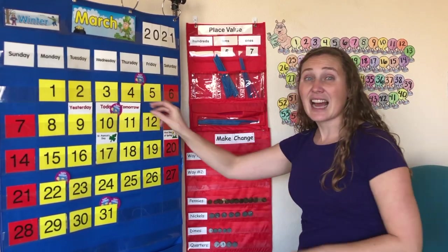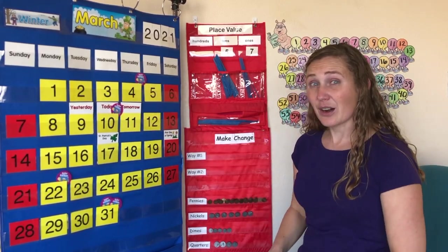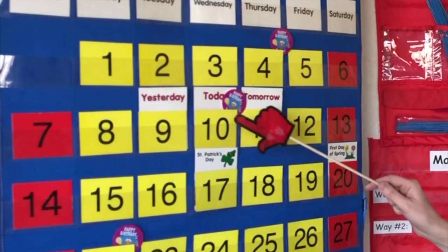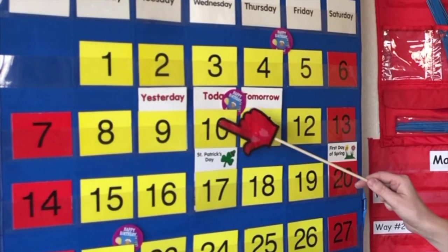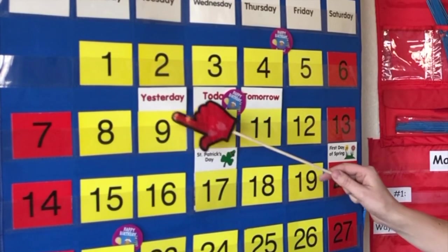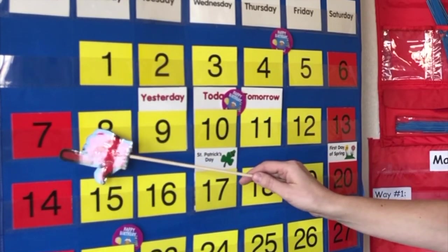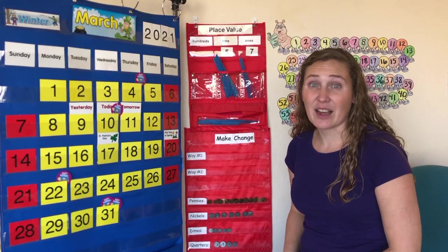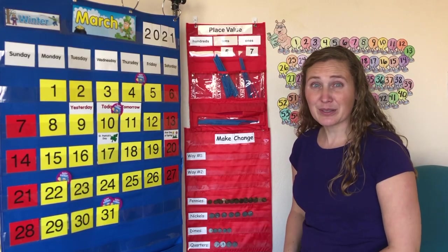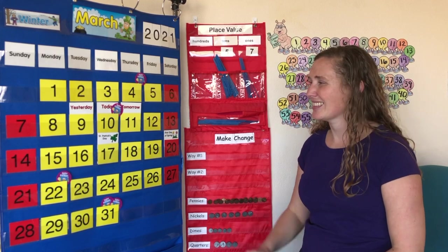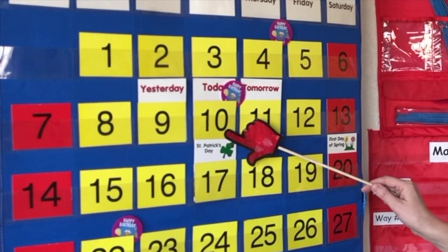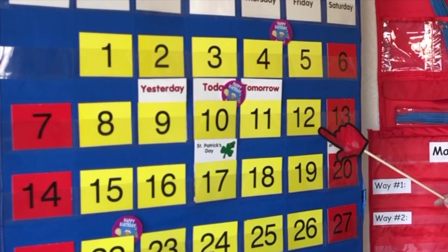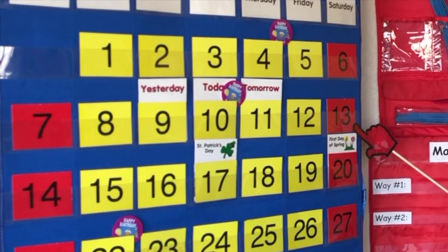Let's count down from the number 10 together. 10, 9, 8, 7. Let's count up from the number 10 together. 10, 11, 12, 13.